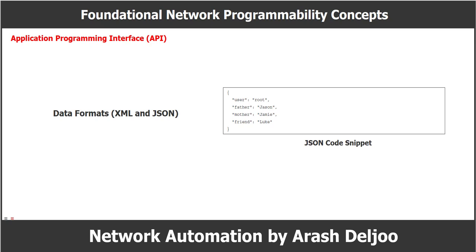This example shows how JSON can represent the same username example as XML, with four separate key-value pairs — one for each user's username. The structure is: opening curly bracket, double quotes, key 'user', colon, double quotes, value 'root', comma, then the next key-colon-value pairs separated by commas. The first key is 'user' and the value for that key is the unique username 'root'. Finally, a closing curly bracket ends the JSON object.